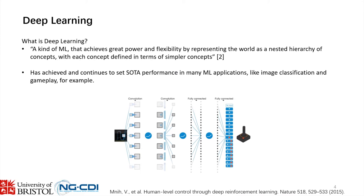Over the past decade, there has been a noticeable shift towards deep learning within machine learning. Deep learning generally refers to the utilization of deep neural networks, which have proved to be incredibly powerful as function approximators, achieving state-of-the-art performance in domains including natural language processing, image classification, and gameplay. Deep learning is a kind of machine learning that achieves great power and flexibility by representing the world as a nested hierarchy of concepts, each defined in terms of simpler concepts. This specific deep neural network is a convolutional neural network taken from 'Human Level Control through Deep Reinforcement Learning,' a seminal paper in deep reinforcement learning.